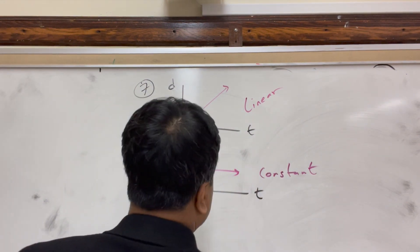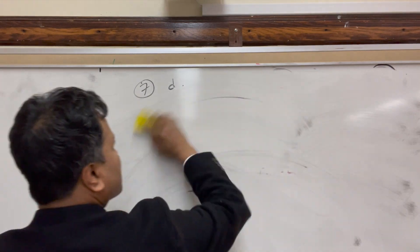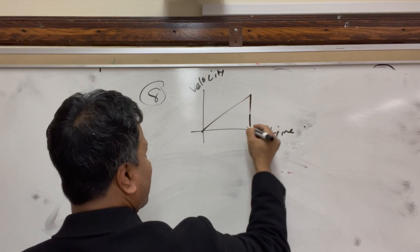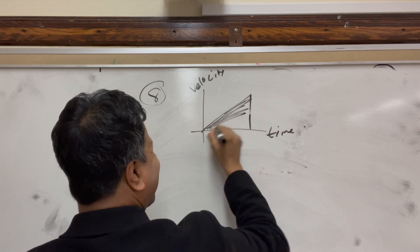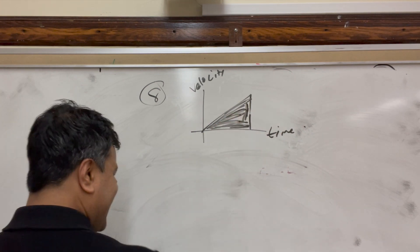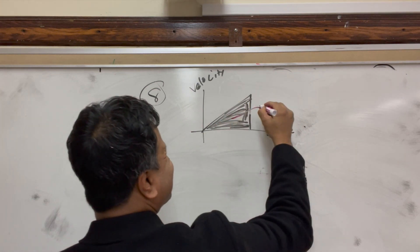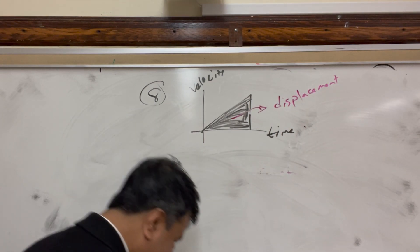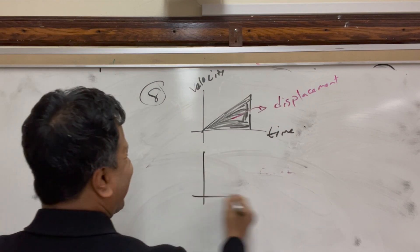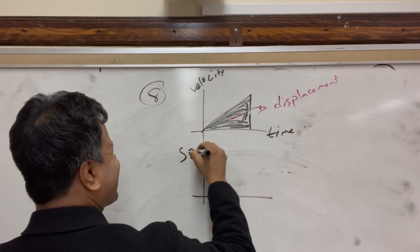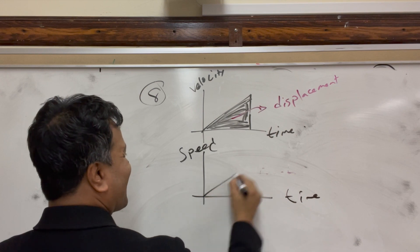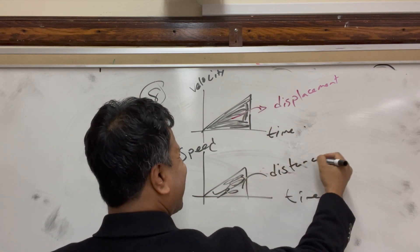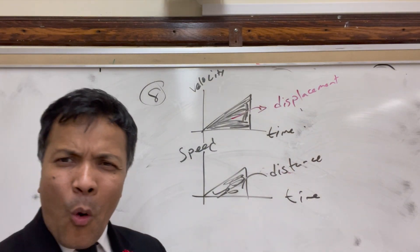Problem eight: you are given a V-T graph and asked about the area under the curve. The area under a velocity-time curve is called displacement — not distance. Never forget that distinction. Write 'distance' by mistake and that would be wrong because it is displacement.